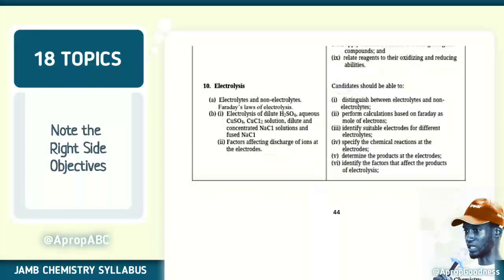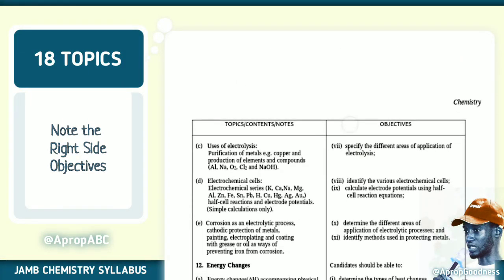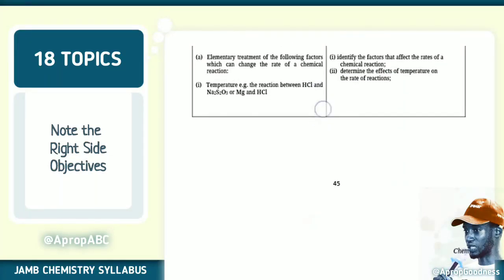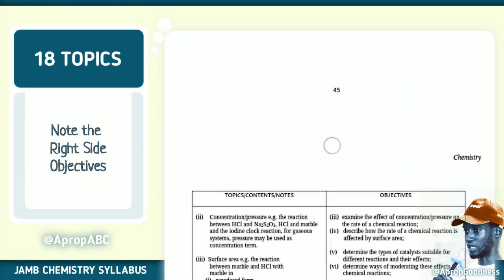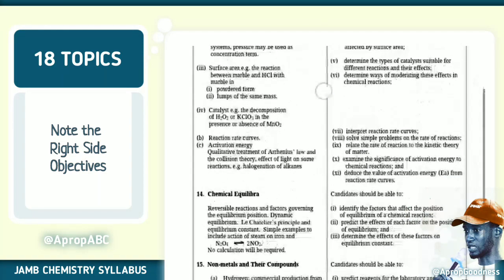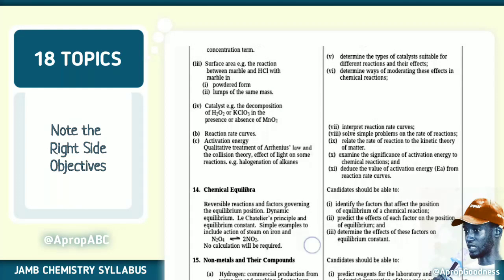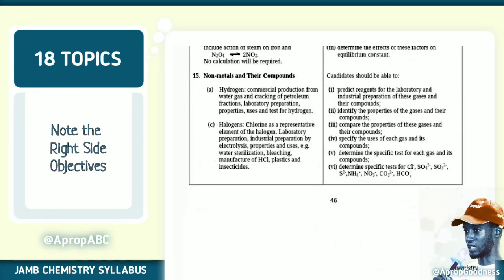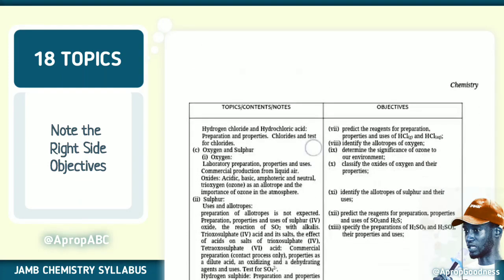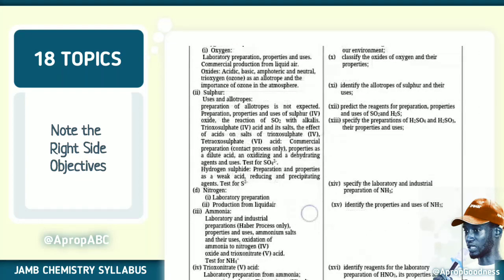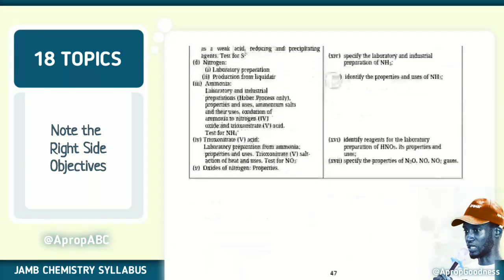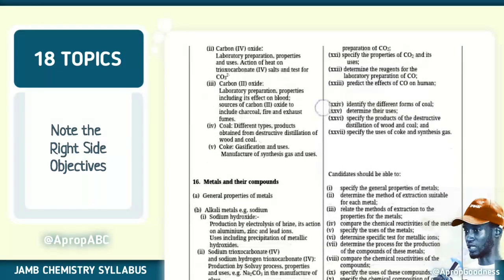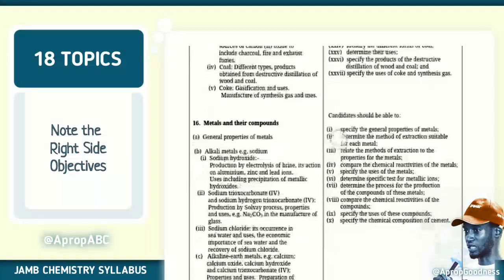Topic eleven is electrolysis. Topic twelve is energy changes. Topic thirteen is rate of chemical reaction. Topic fourteen is chemical equilibria. Topic fifteen is non-metals and their compounds — this includes oxygen, sulfur, nitrogen, ammonia, and the nitrogen cycle. Note that, as well as carbon.